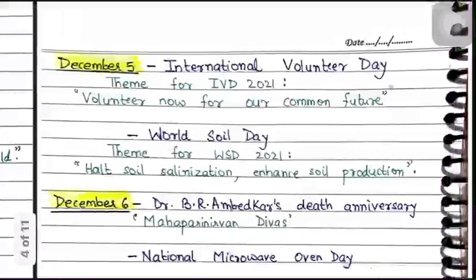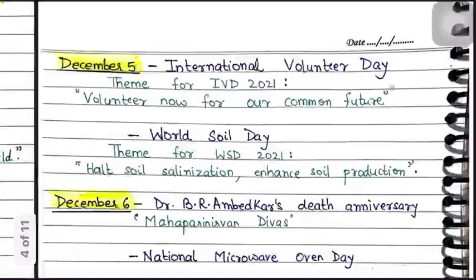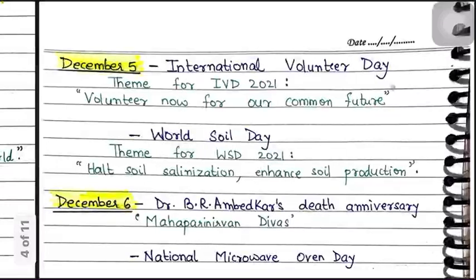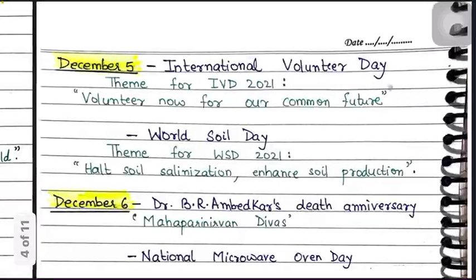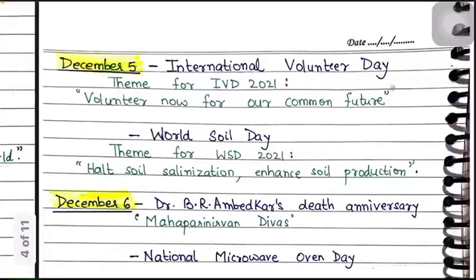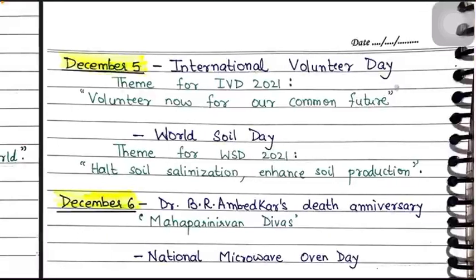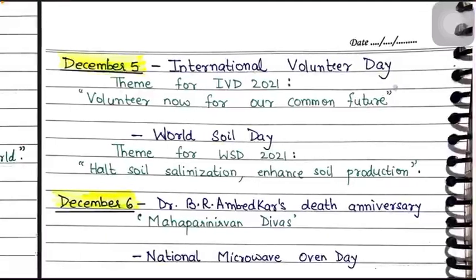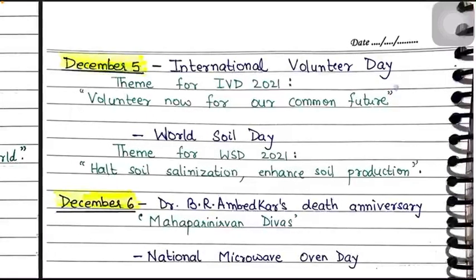December 5 is International Volunteer Day (IVD), which provides a chance for volunteers and organizations to celebrate their efforts and promote their work. The theme for IVD 2021 was 'Volunteer Now for Our Common Future.' December 5 is also celebrated as World Soil Day. The theme was 'Halt Soil Salinization, Boost Soil Productivity,' aimed at raising awareness about the importance of soil and a healthy ecosystem.